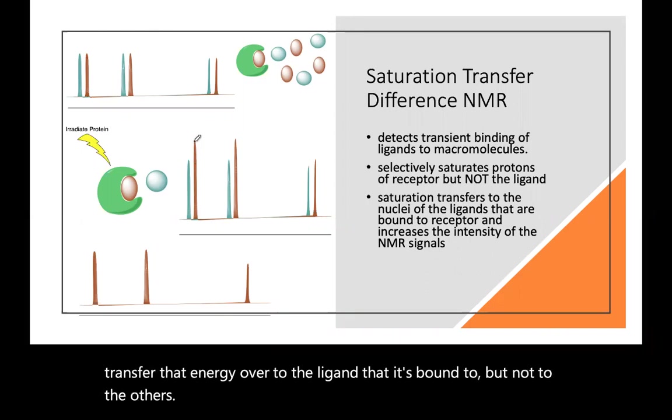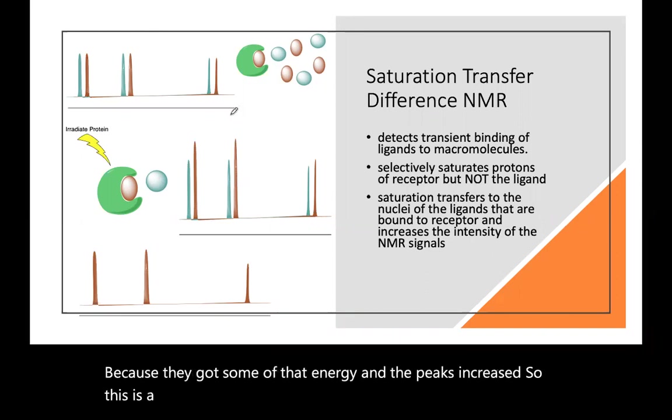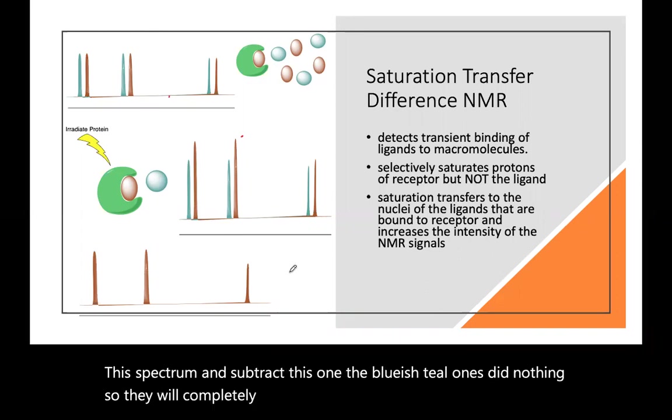So you see the orangish ones go up because they got some of that energy and the peaks increased. So this is a lot like NOE where we saw the peaks increase when we irradiated another one nearby. So then I can take this spectrum and subtract this one. The bluish teal ones did nothing, so they will completely disappear.